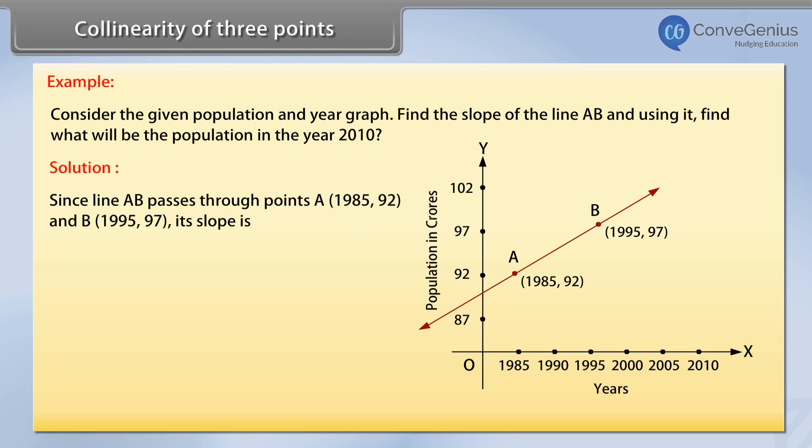1985, 92 and B, 1995, 97, its slope is 97 minus 92 by 1995 minus 1985 is equal to 5 by 10 is equal to 1 by 2.